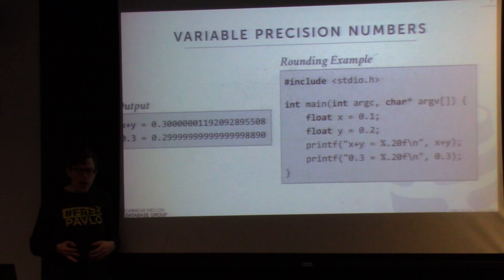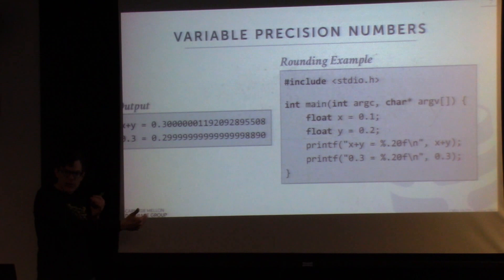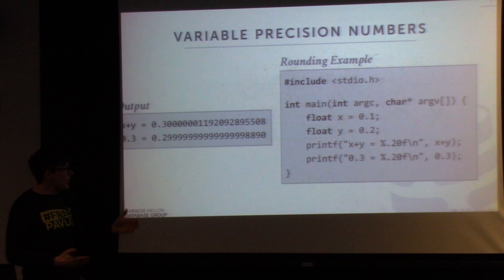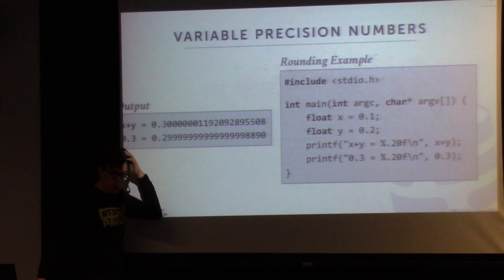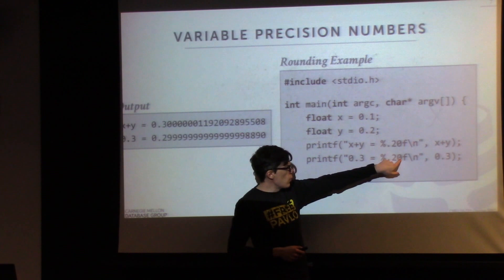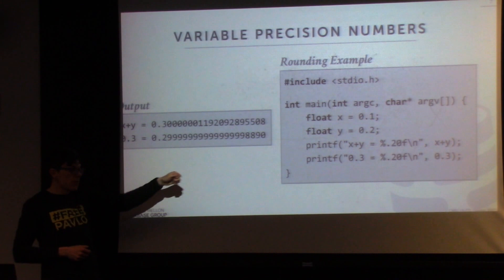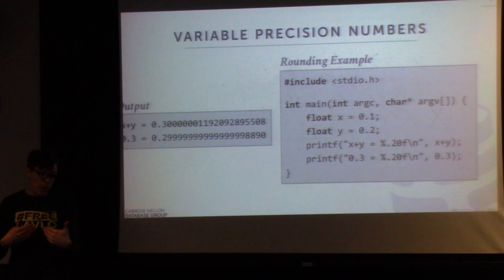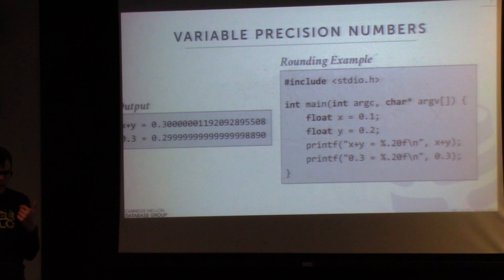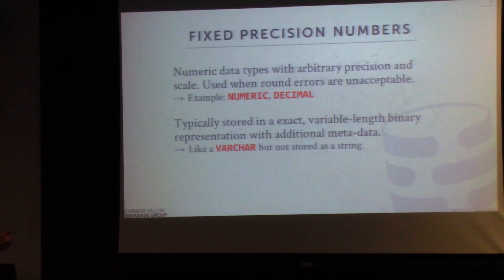This is why some of you were getting rounding errors — when you did printf, the output would look like an exact match, but when you do an equality comparison between the two numbers, they come up different. At the very low end of the value, there are extra decimal places. If I removed the 20-decimal-place qualifier from the print statement, both would show 0.30000 and look the same, but the comparison would still fail — because for variable-precision numbers, decimals cannot be stored exactly.